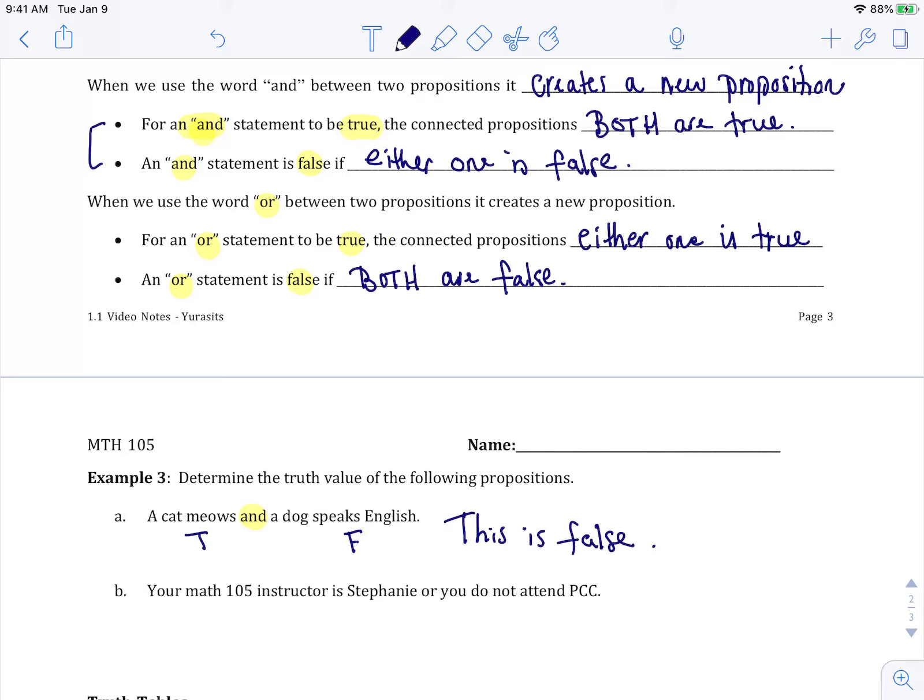For the next example, it says your math 105 instructor is Stephanie or you do not attend PCC. So this is an OR statement, so I'm focusing here. Your math 105 instructor is Stephanie. Well that's true, right? Luckily you're listening to this video right now and it's made by me, so I am your teacher for this term. Or you do not attend PCC. Well, in order to take this class, you have to be a PCC student, so that's false. The difference is this is an OR statement. So you just need one proposition to be true for the whole thing to be true.